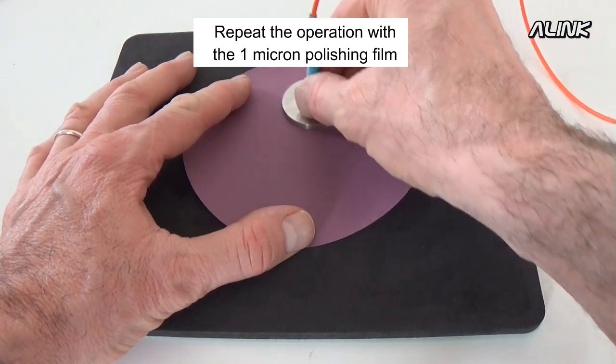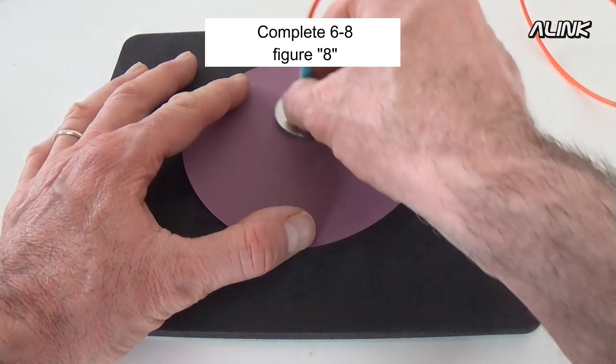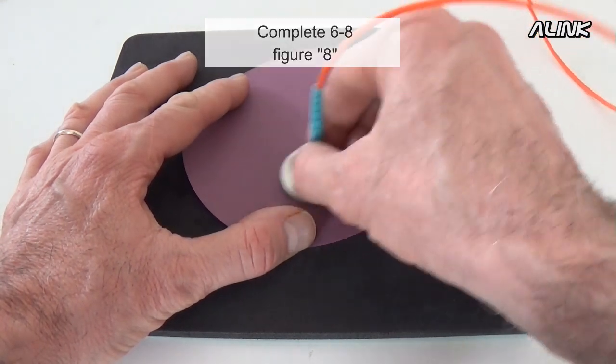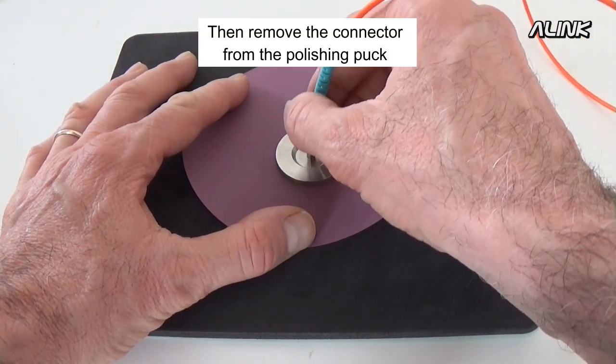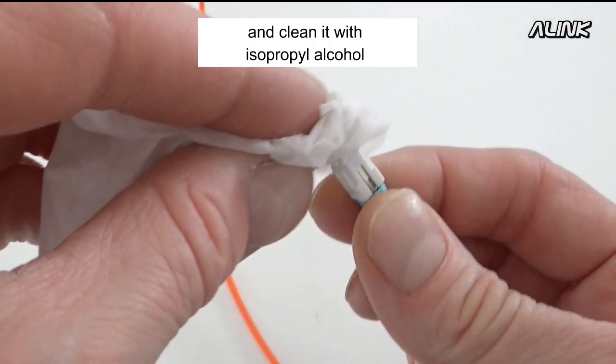Repeat the operation with the 1 micron polishing film. Complete 6 to 8 figure-8s. Then remove the connector from the polishing puck and clean it with isopropyl alcohol.